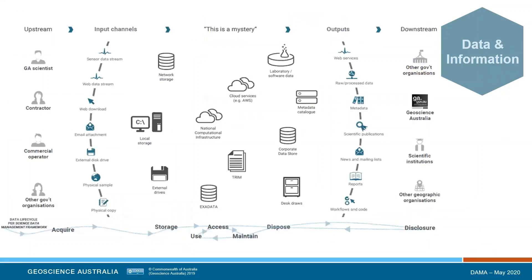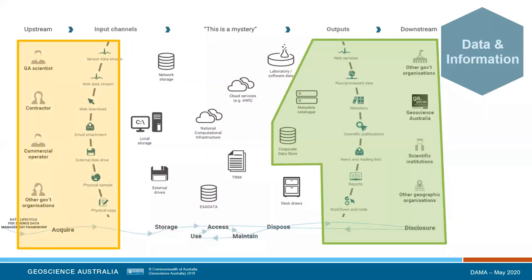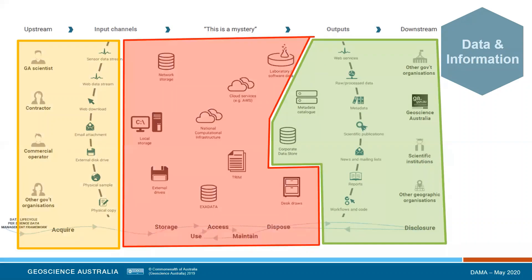Product publishing through the data and publications catalogue is a well understood process — most people at GA understand they're meant to publish data and products through the catalogue before making them available outside their project spaces or outside GA. We're also confident there should be more of an enterprise role over data being brought into the building, and we've been working on a way to best capture and preserve that source data. What we have little visibility or control over are the science project spaces, and support for that area is ongoing under data management and roles and responsibilities work, rather than the catalogue.